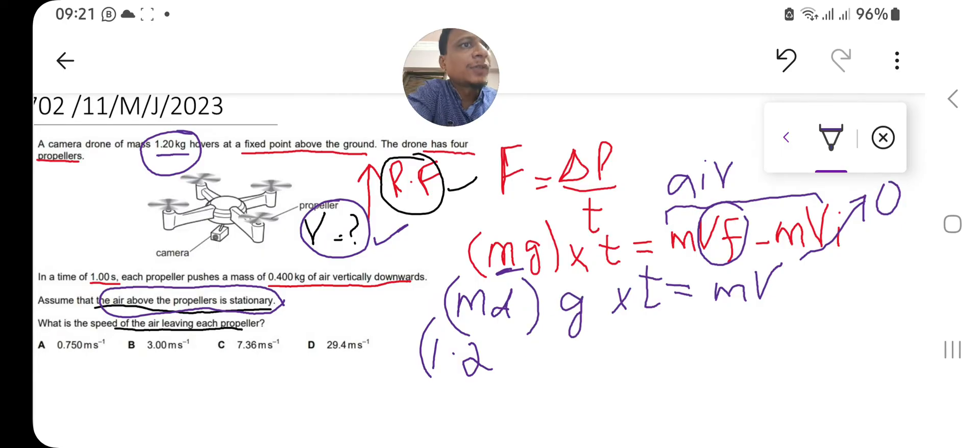There is a small mistake. On the left hand side, we already considered the mass of drone only. We have no use for the mass of the propellers on the left side because the right side is air. The propeller is pushing the air, so four propellers will be considered on the right hand side because it is affecting the air, pushing it downward.